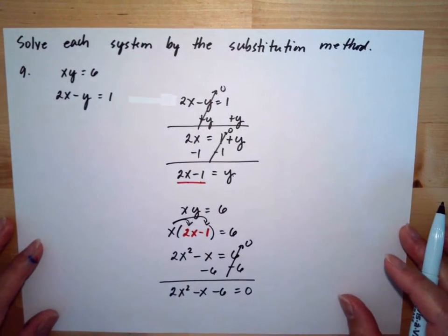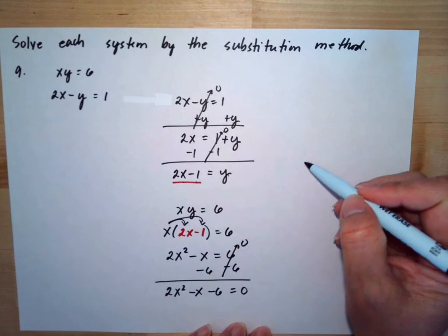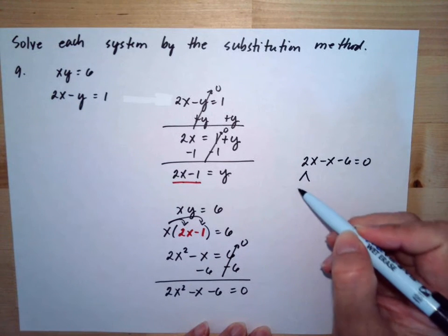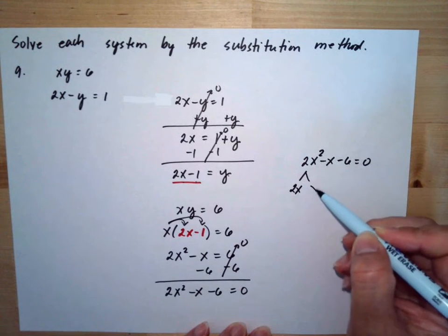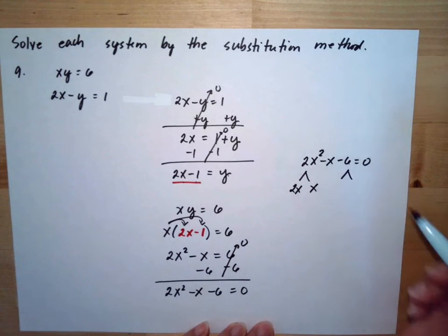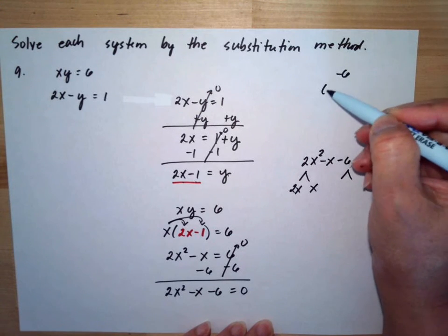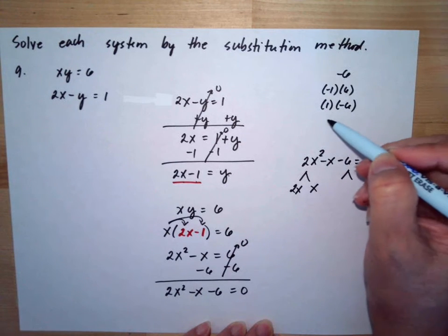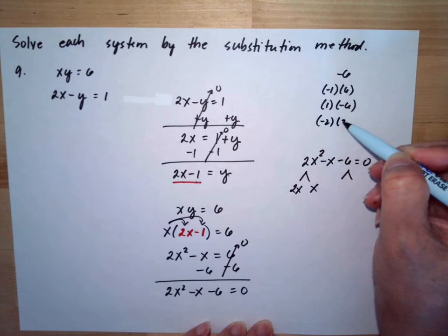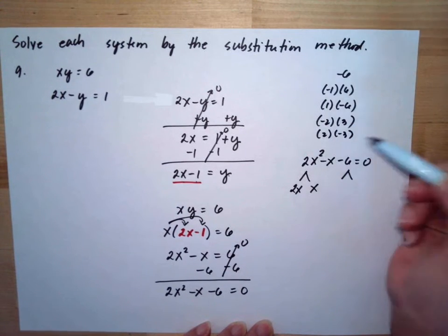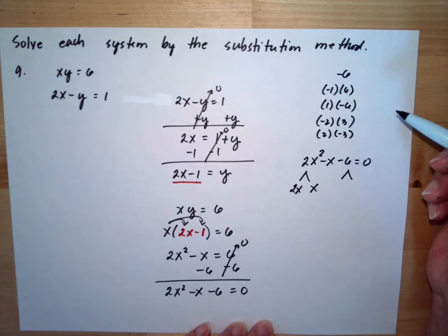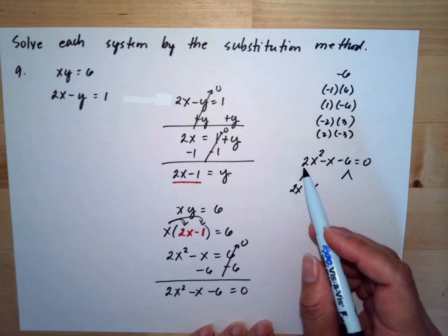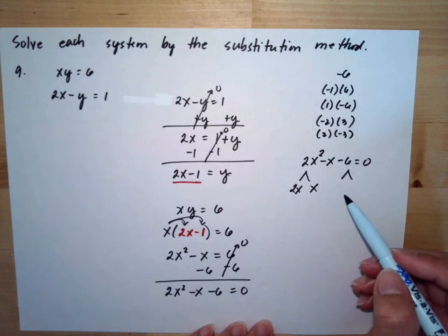After that I can do the factoring. We have 2x squared minus x minus 6 is equal to 0. Because the leading coefficient a is not 1, we will use trial and error. The factors of 6 include negative 1 and positive 6, positive 1 and negative 6, negative 2 and positive 3, or positive 2 and negative 3. All of these give a product of negative 6. We need to produce a middle term of negative 1x.